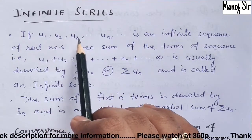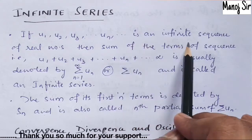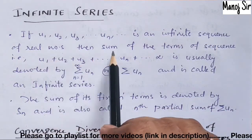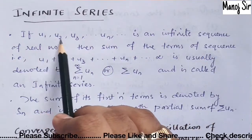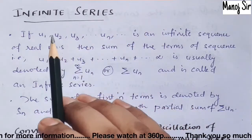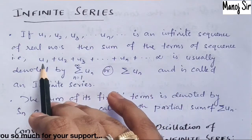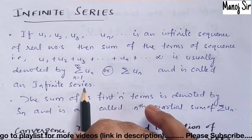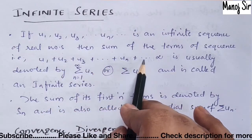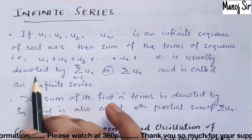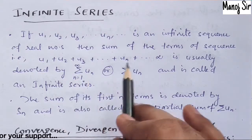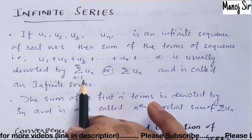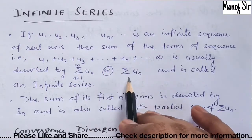If u₁, u₂, u₃, ..., uₙ, ... is an infinite sequence of real numbers, then the sum of the terms of the sequence — that is, u₁ + u₂ + u₃ + ... + uₙ + ... up to infinity — is called an infinite series. It is usually denoted by summation n equals 1 to infinity of uₙ, or simply as Σuₙ.